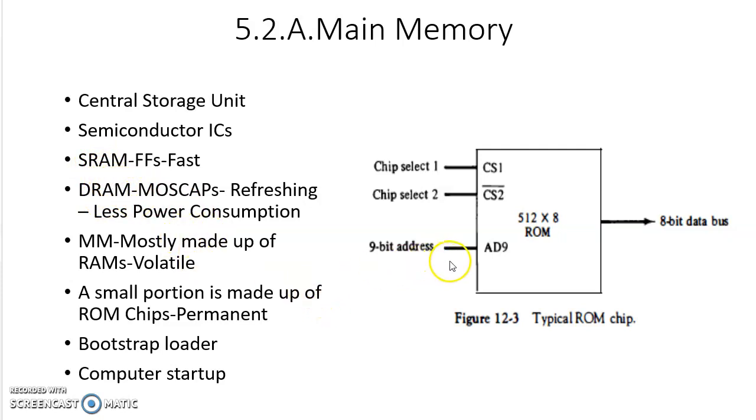Now, let us look at the typical ROM and RAM chips which are used to construct main memory. This is the typical ROM chip. What are the pins available? CS1 and CS2. CS stands for chip select. With the help of these two pins, the CPU will access the memory. The size of this ROM chip is 512 by 8.